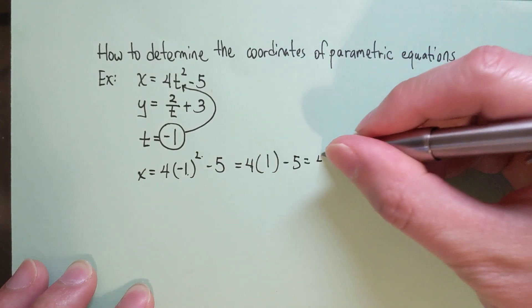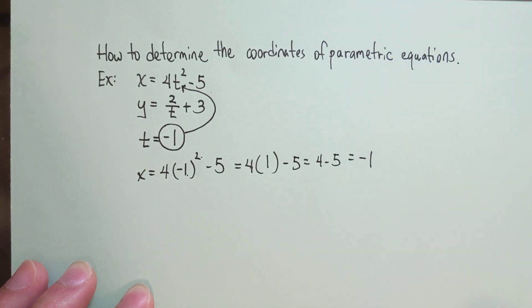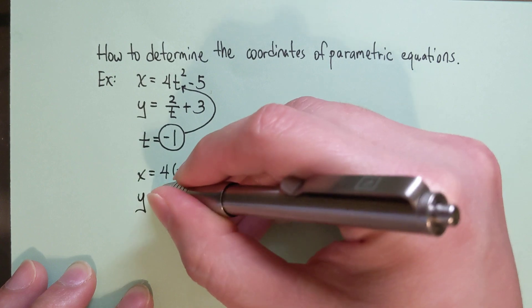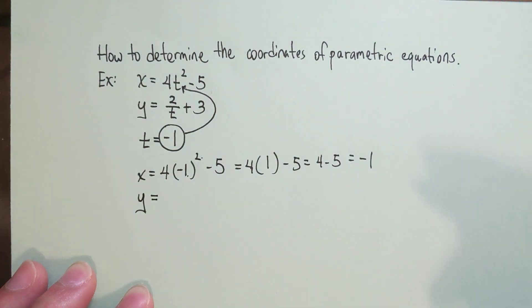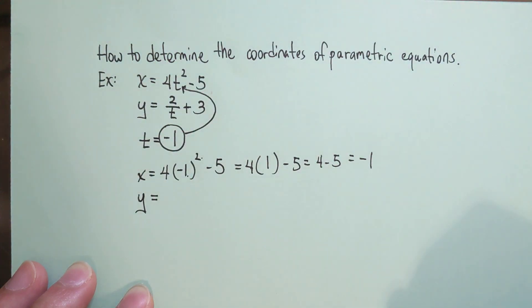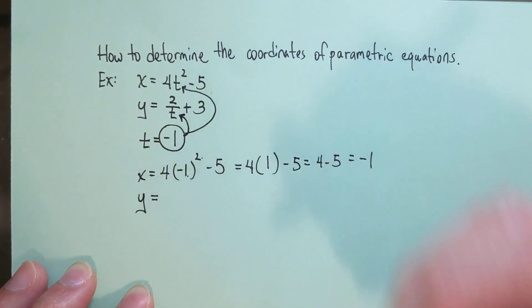4 times 1 is 4. 4 minus 5 is negative 1. To figure out the y coordinate, you follow the exact same steps.